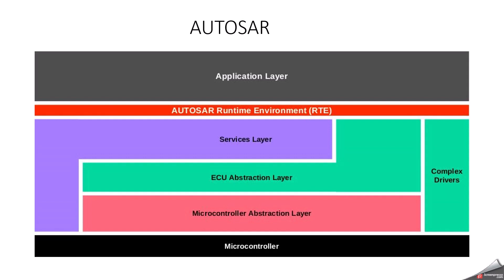As you all know, AutoSAR has three layers. One is the application layer, another one is RTE, and the third one is the base software layer. In the base software, we have three layers: one is the service layer, ECU abstraction layer, and microcontroller abstraction layer. So for every layer, we need specific tools.